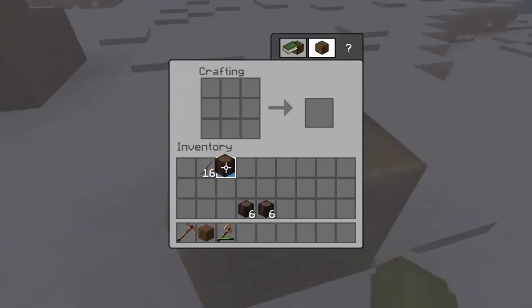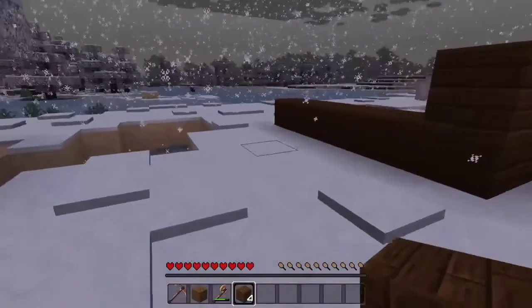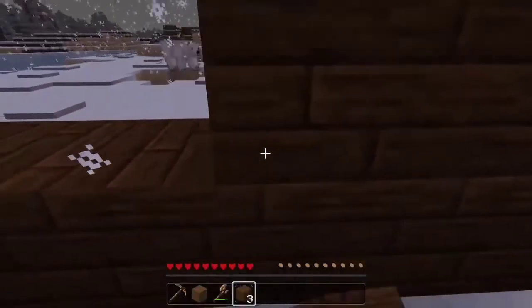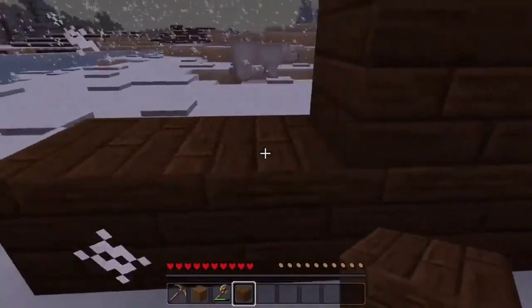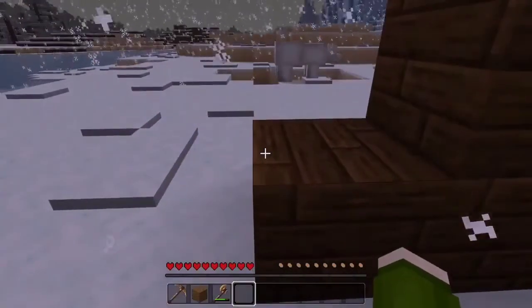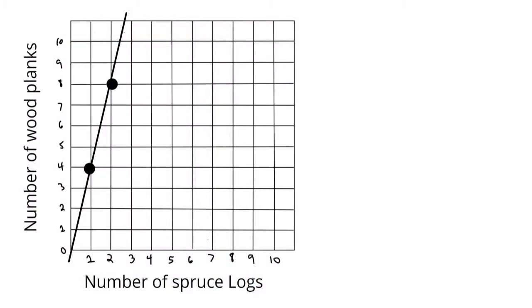I'm going to take one spruce log and I get four planks out of that. So my line graph represents this situation where one spruce log makes four wood planks and then two spruce logs would make eight wood planks.